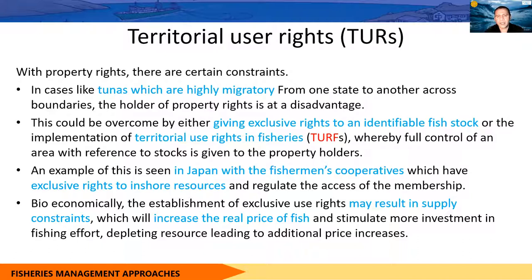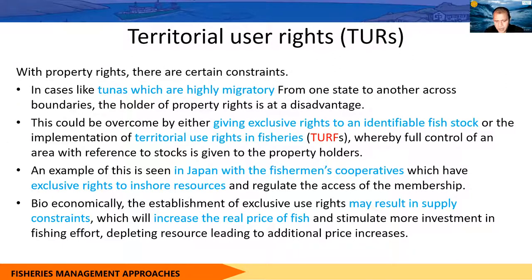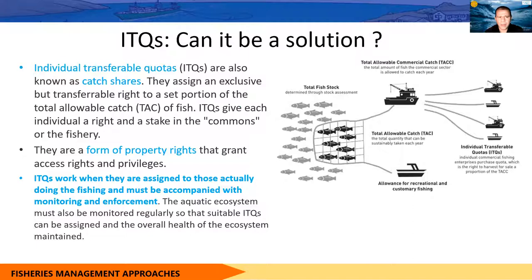This TURF system is practiced in Japan for tuna fisheries. But we need to be very careful because only a cooperative fishermen's society does this, and they can manipulate the market. You can imagine what would happen in a country like ours if you give a group of people control over the fisheries — they could freely increase the price, reduce the catch, and increase the price arbitrarily, just like what is happening these days with sugar and rice. The same thing can apply in fisheries.